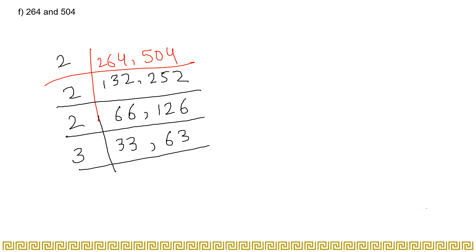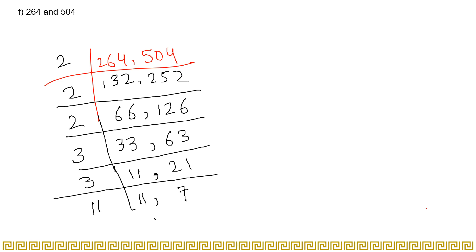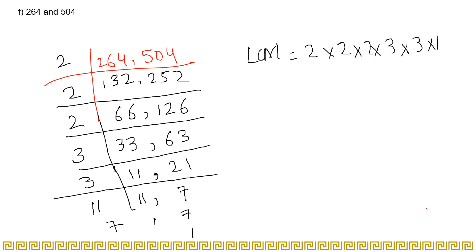After dividing by 2 three times, we then divide by 3. 3×11=33 and 3×21=63. Dividing again by 3: 3×7=21, leaving 11. Now 11 and 7 are both prime numbers. The LCM is 2 × 2 × 2 × 3 × 3 × 11 × 7. Multiplying all of these together gives you 5544.